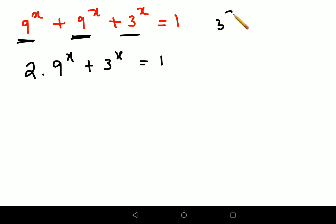Now if you look closely 3 squared gets you 9, so therefore I can say 9 raised to x is nothing but 3 raised to 2 the whole raised to x. And using the law of indices you can write this as 3 raised to 2 times x.